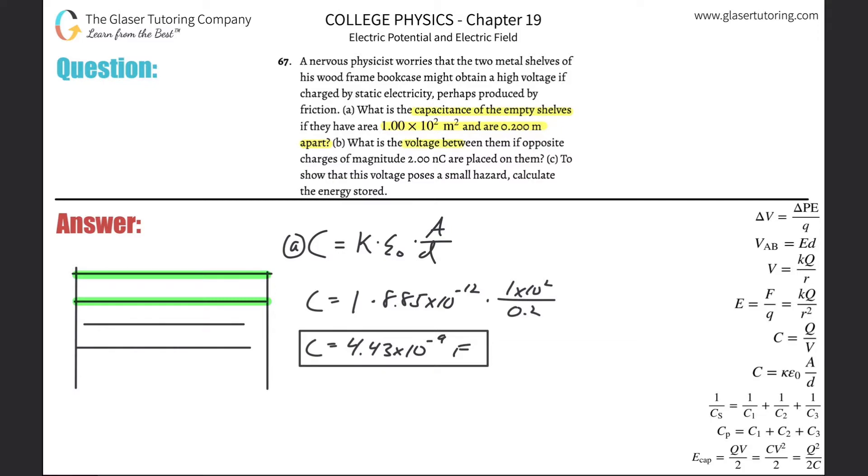That's done. Letter B says: What is the voltage between them if opposite charges of magnitude 2 nanocoulombs are placed on them? So again, this is the same thing - if you have equal magnitude, negative 2 and positive 2 on each, you're not going to add them together and get 4 nanocoulombs. You're just taking the charge on one.